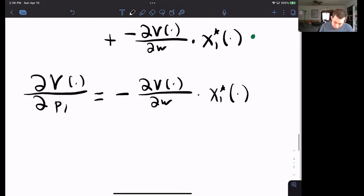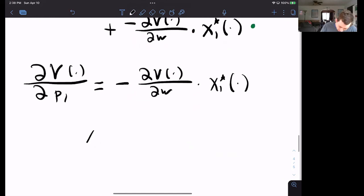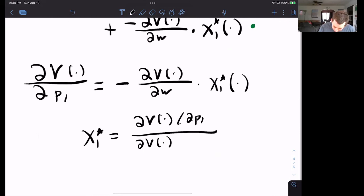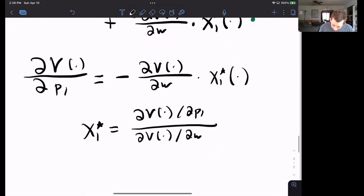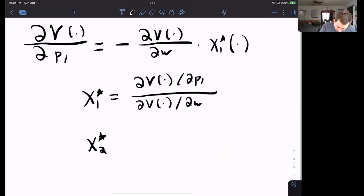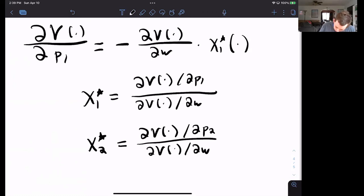Well, okay, I can just solve this with algebra, to say that x1 star is equal to negative dv with respect to p1 divided by the partial derivative of indirect utility with respect to wealth. And I can just write the same thing for x2. If I were to do these same steps, this would be dv star with respect to price two over the partial derivative of the indirect utility function with respect to wealth. And then I almost forgot this negative sign in front of both fractions.